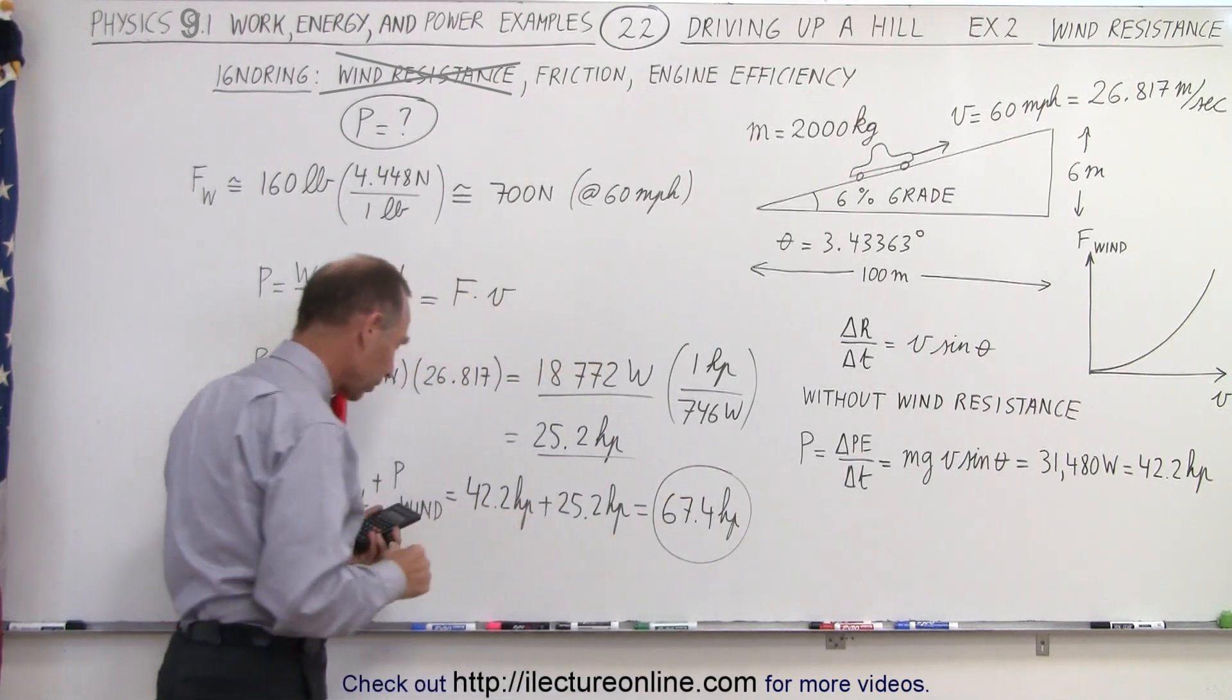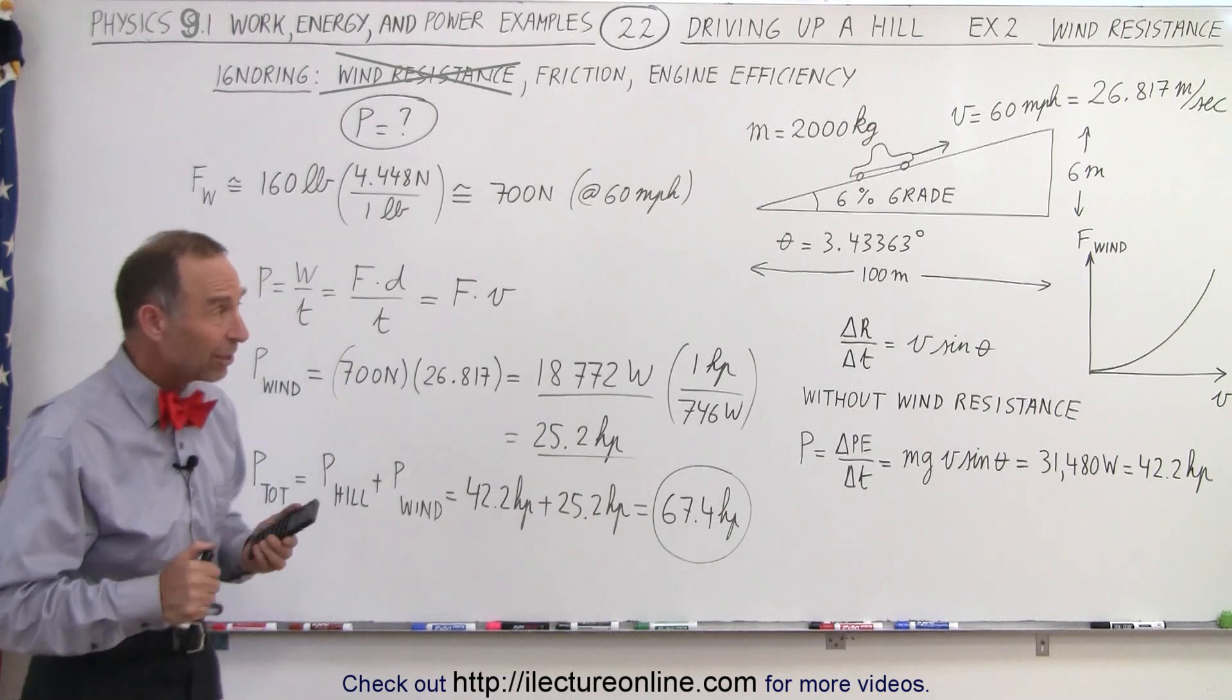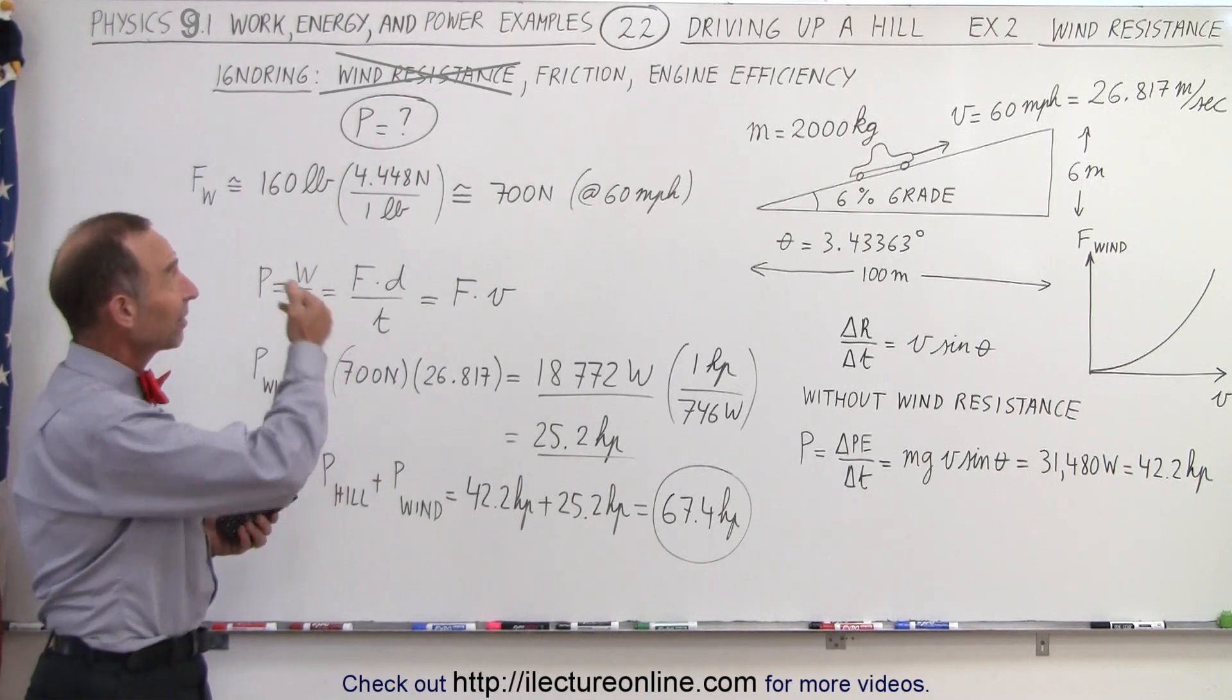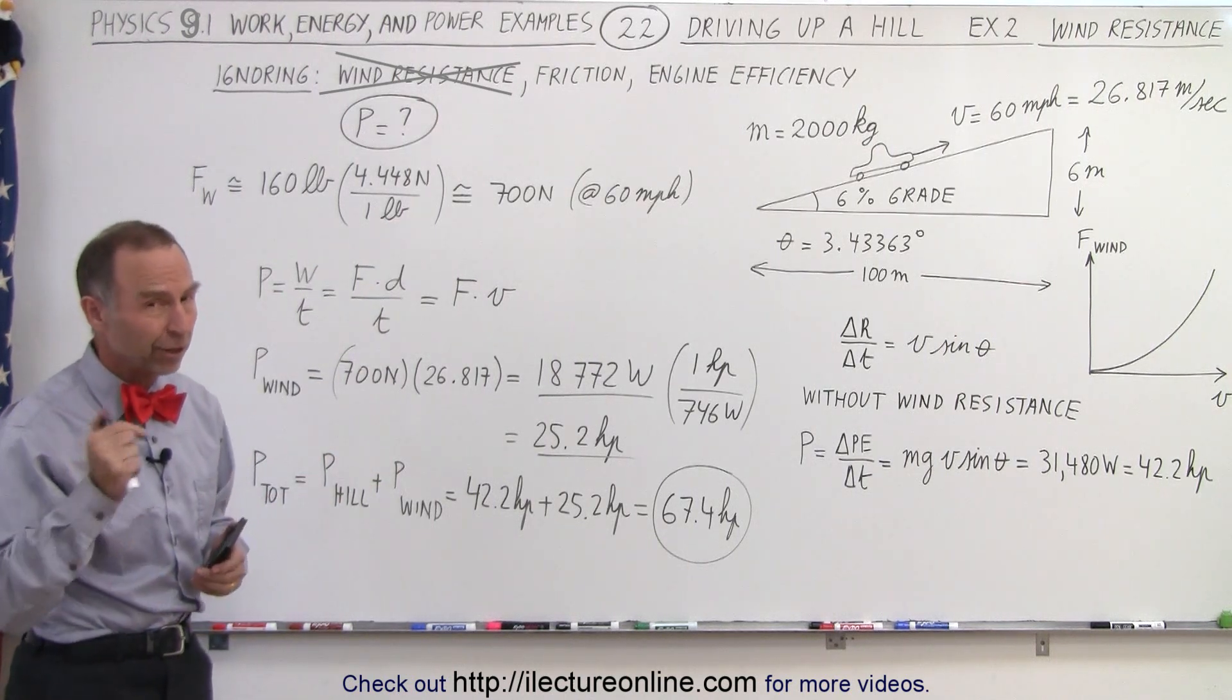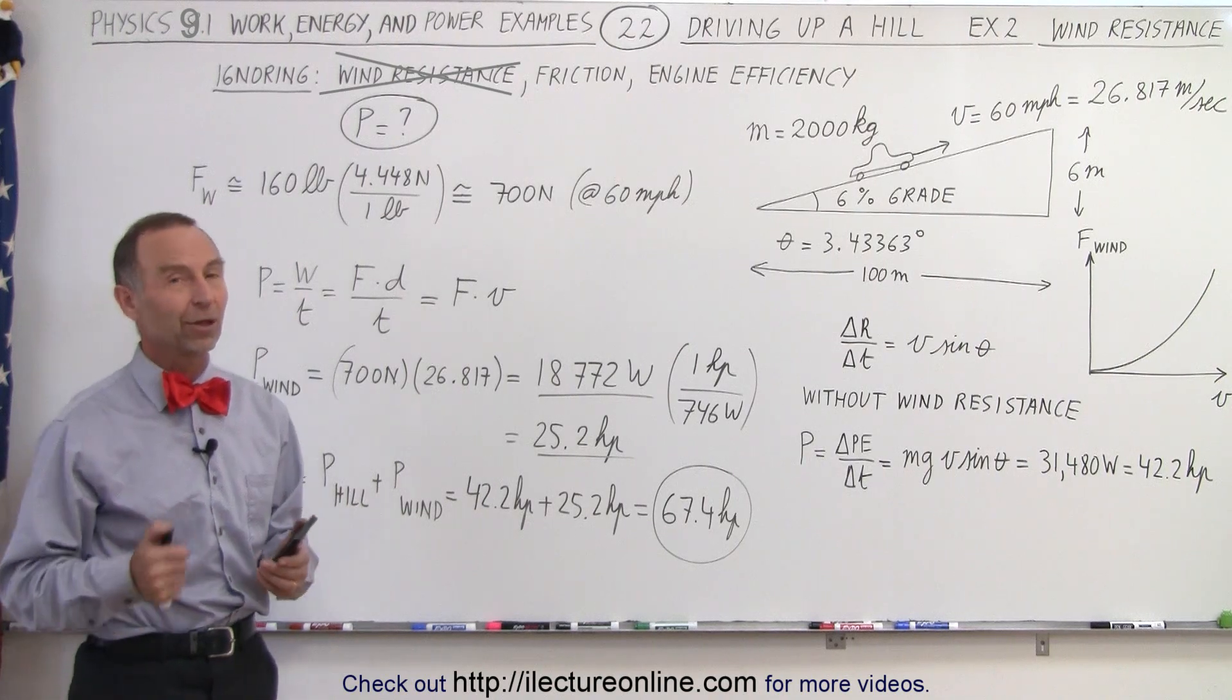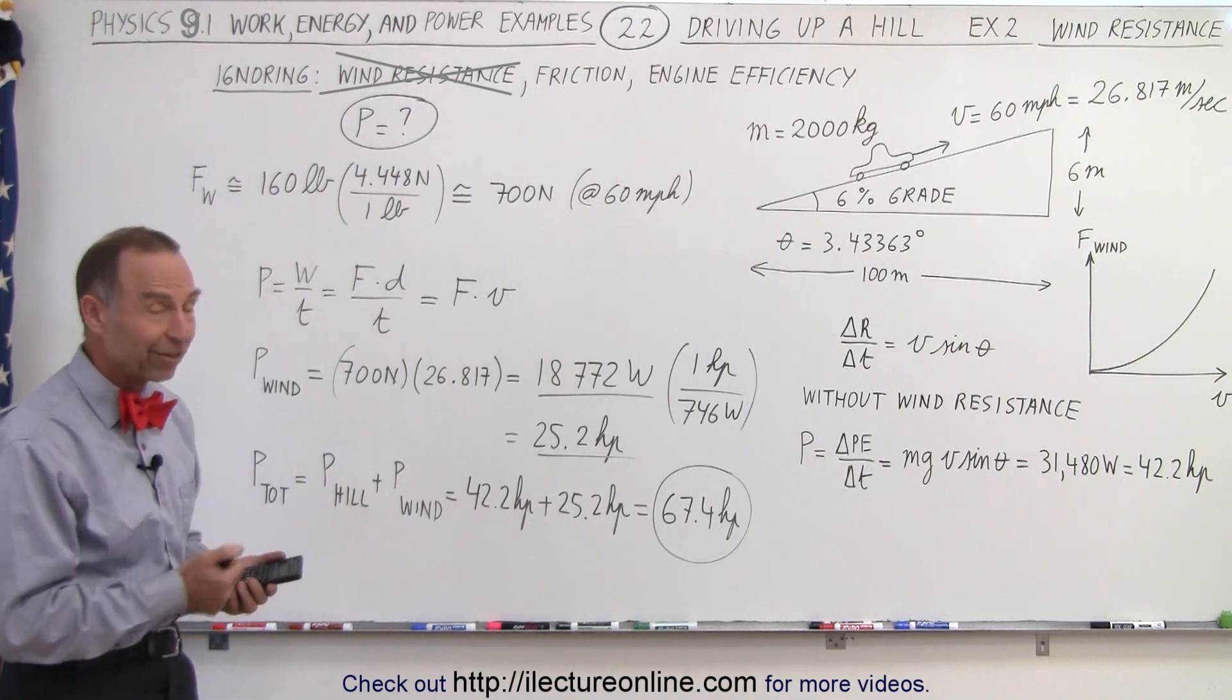The amount of horsepower required to overcome both the wind resistance and to drive up the hill at 60 miles per hour. But again, that's ignoring friction, engine efficiency, and so forth. So stay tuned and we'll see how those things affect the amount of power required to drive up a hill. And that's how it's done.